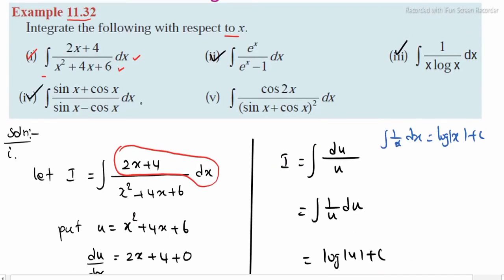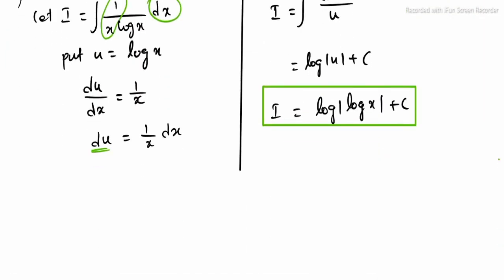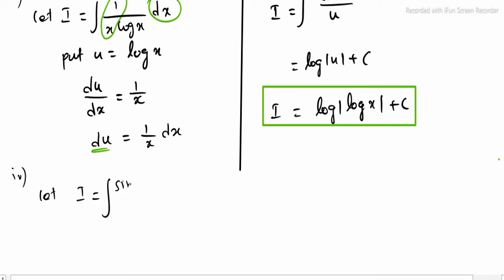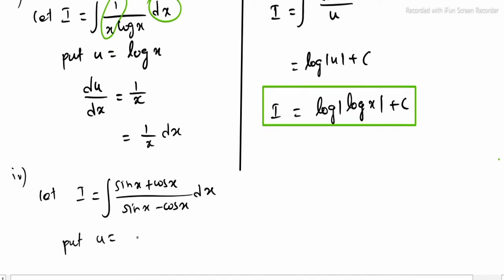Sub-question 4: integrating (sin x + cos x) divided by (sin x - cos x) dx. Let i equal the integral of (sin x + cos x)/(sin x - cos x) dx. This is a denominator substitution. Put u equal to sin x - cos x.